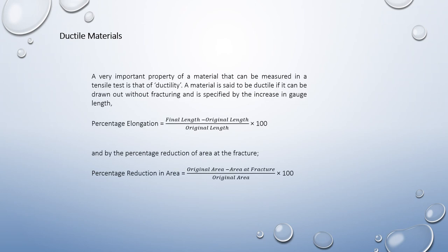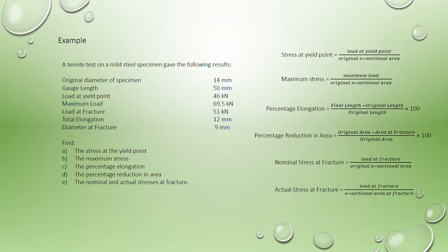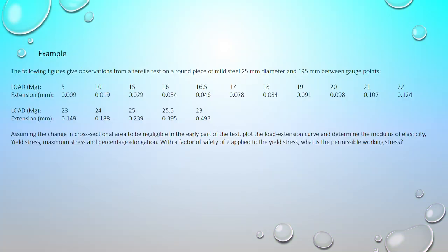For ductile materials, ductility can be measured by percentage elongation and percentage reduction in area, using specific formulas. Examples demonstrating how to solve related problems will be shown in subsequent videos. Thanks — please subscribe and share.